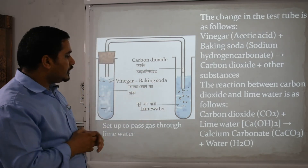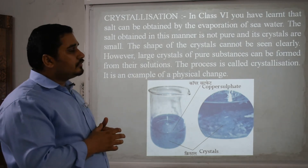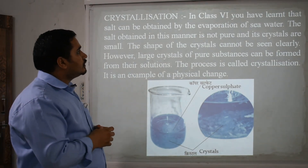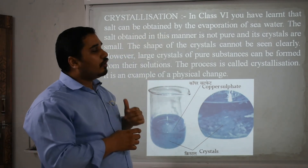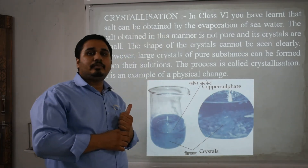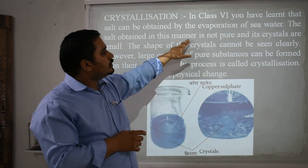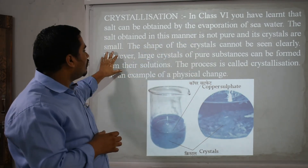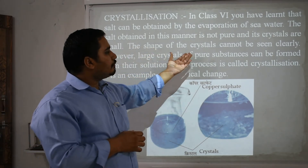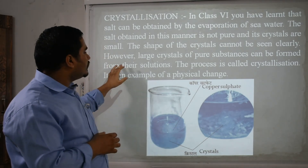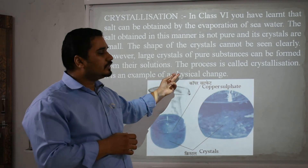These equations can be easily demonstrated through the setup of lime water. Sometimes we also discuss crystallization. In Class 6, you learnt that salt can be obtained by the evaporation of seawater — it is a natural process. The salt obtained this way is not pure and its crystals are small; the shape of the crystals cannot be seen clearly. However, large crystals of a pure substance can be formed from their solutions. This process is called crystallization, and it is also an example of a physical change — no new substance is formed.